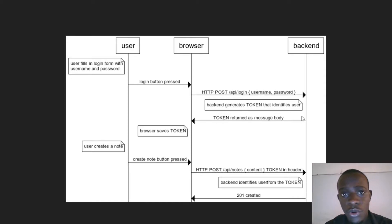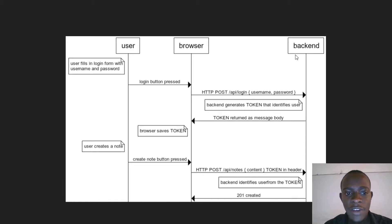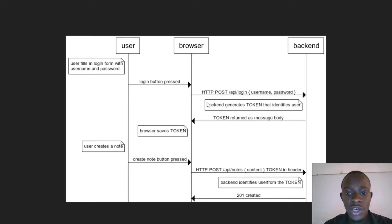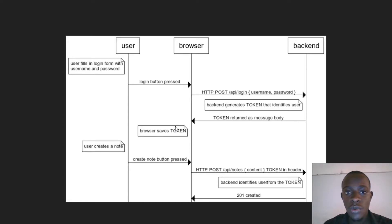This is a simple diagram that will show you the whole entire process we're going to follow in this video. We have our back end and our browser — consider our browser as our React app and our back end as our Flask API. We have our user who fills in the form on the front end, and when they log in they send their username and password to the slash API slash login route.